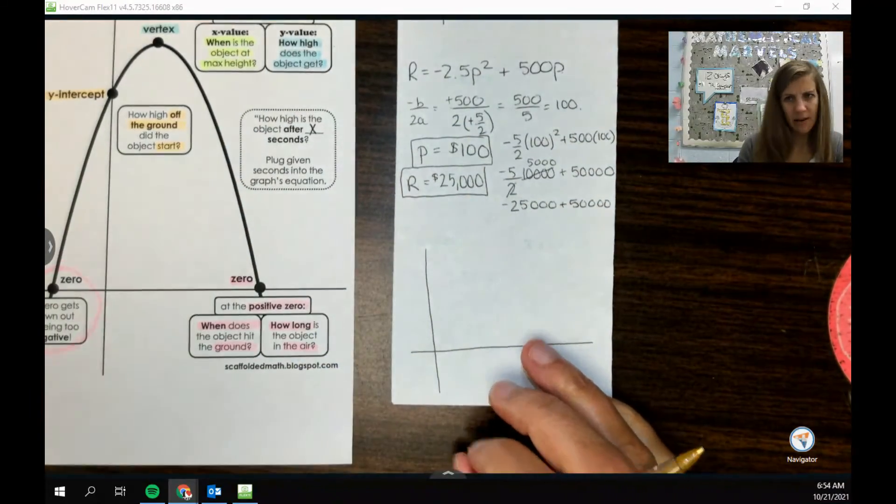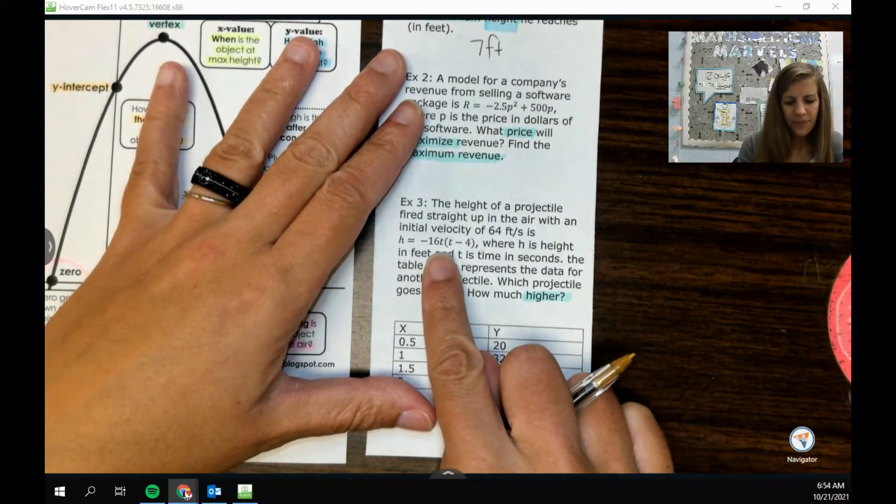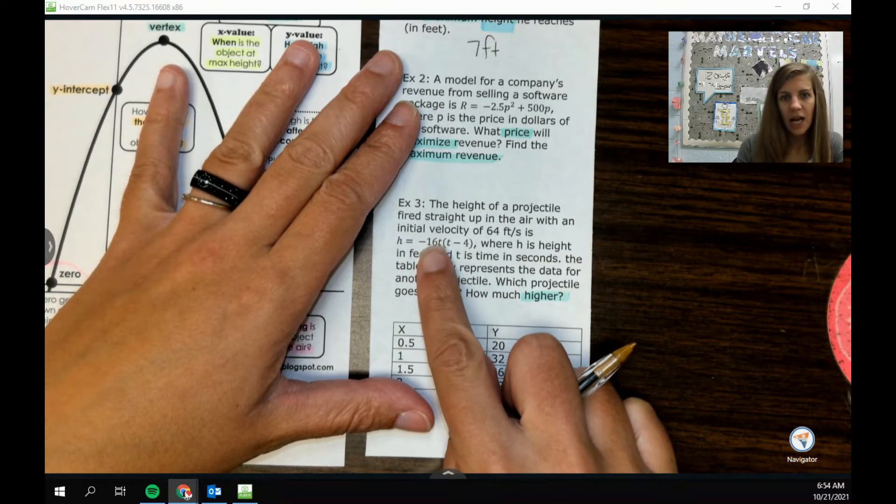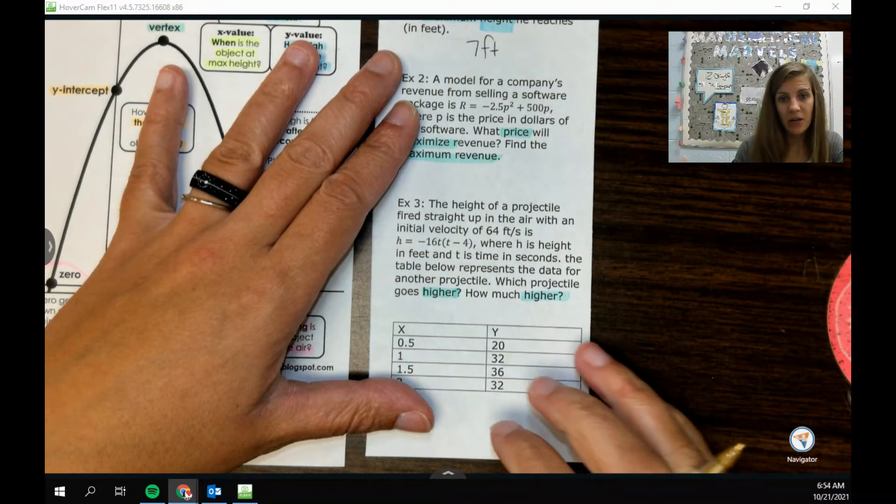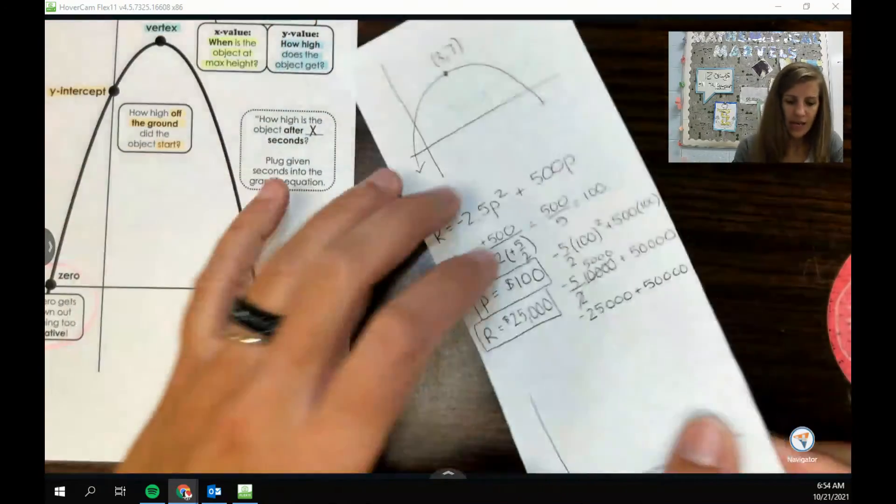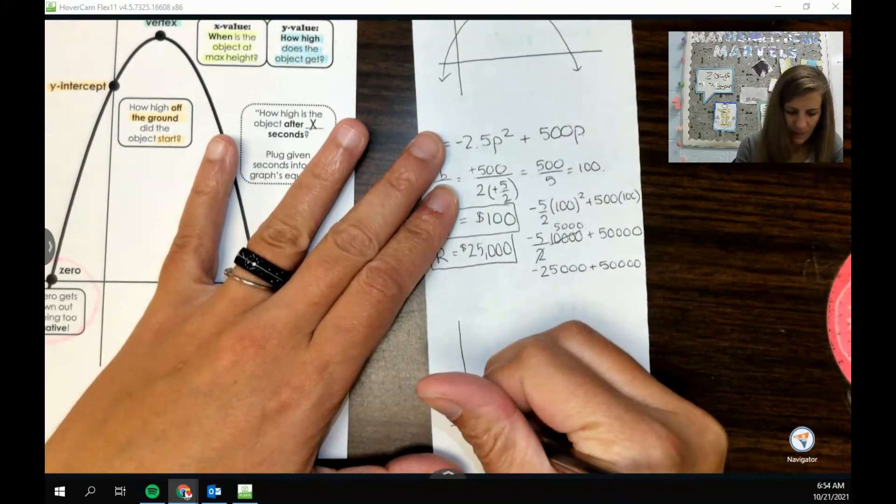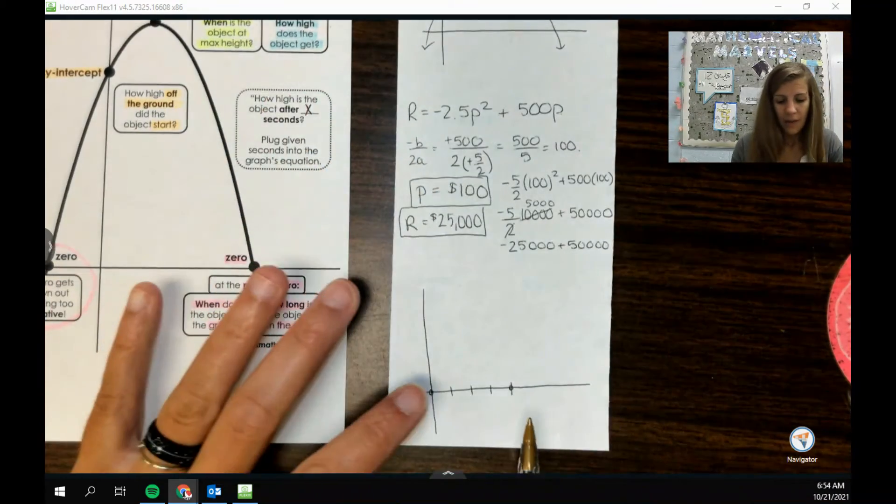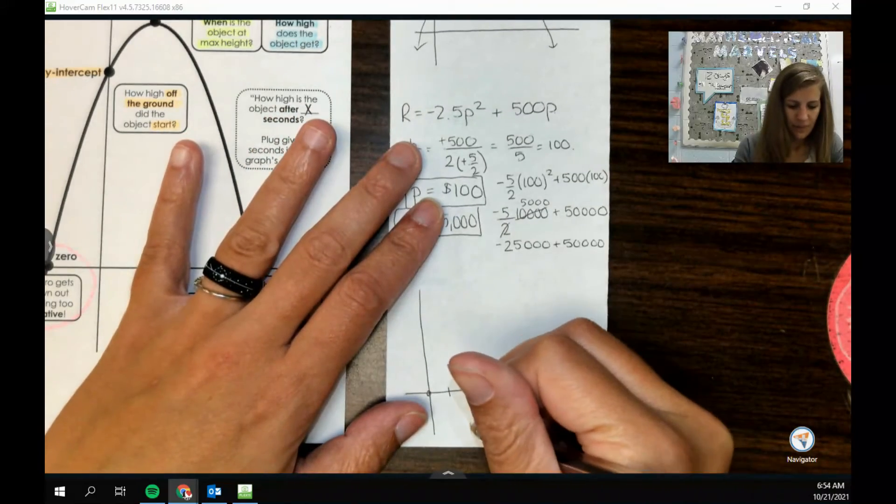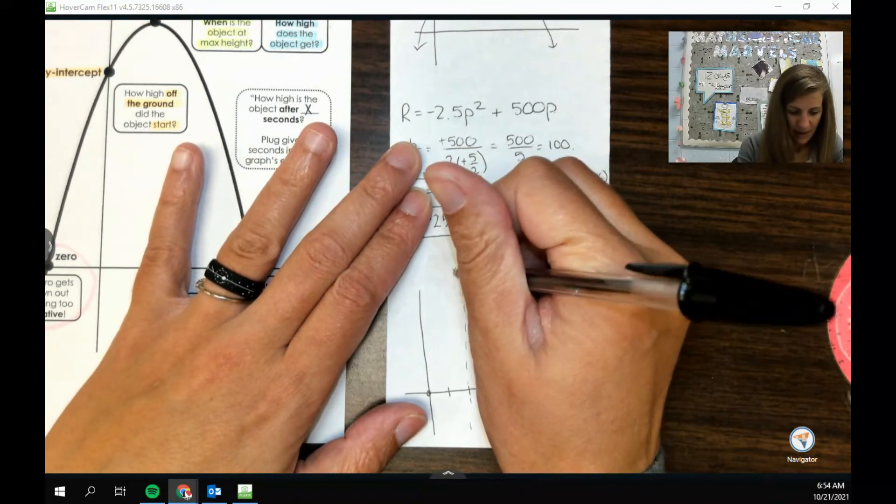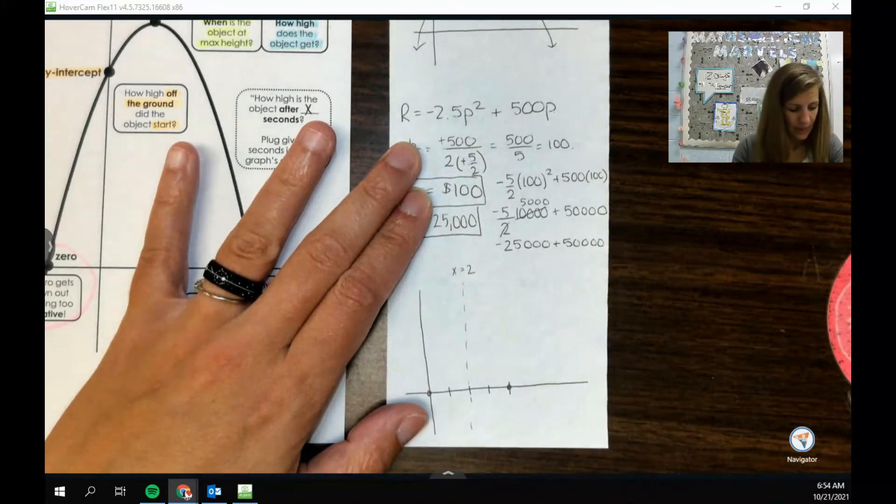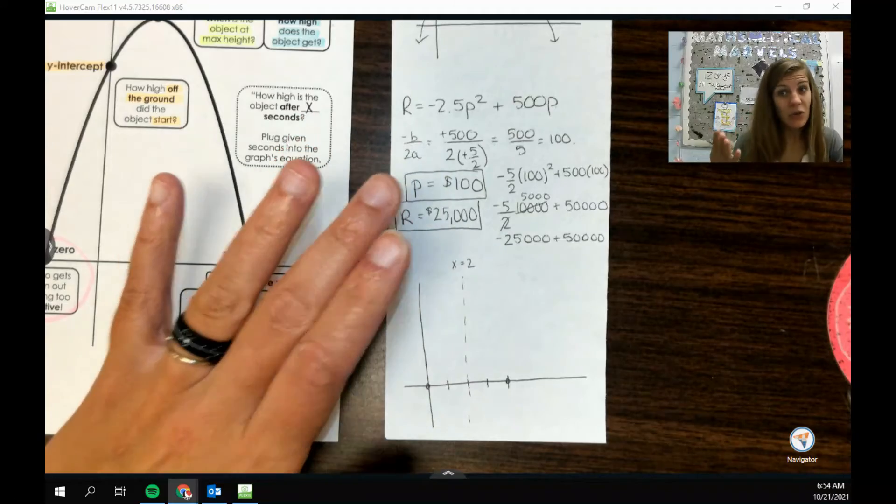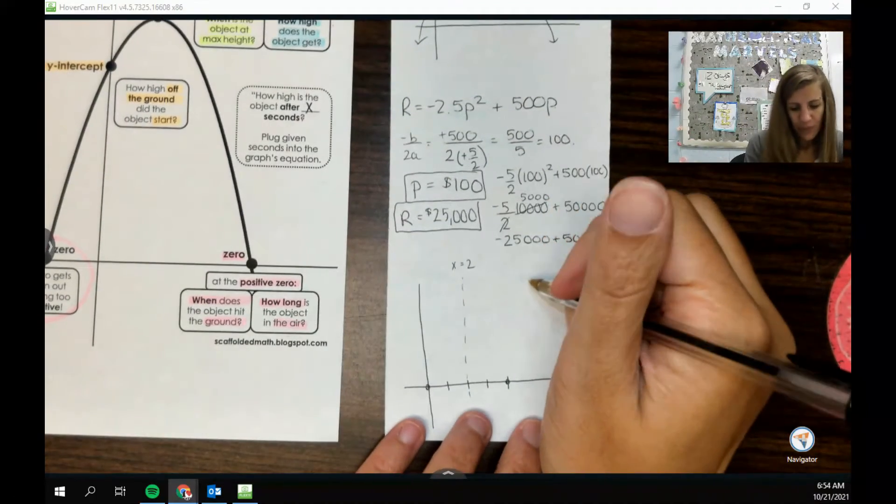So the equation is actually in factored form, negative so pointing down, and then my two x-intercepts are zero and four. So that's kind of nice, so we got zero zero and then four. Then we can find the center by counting in, so the x value of my vertex is going to be two. And so then we can figure out, like I know it's going to be a parabola like this, but we do want to know how high.